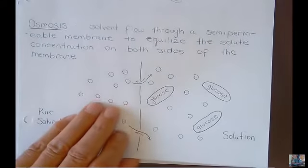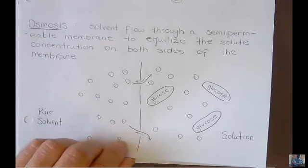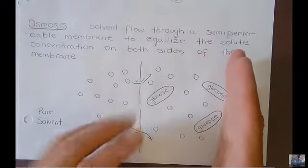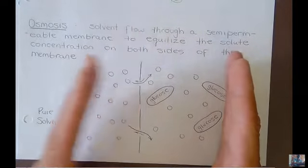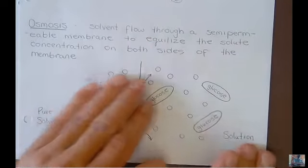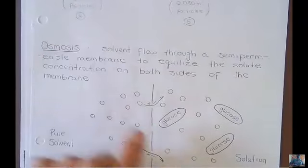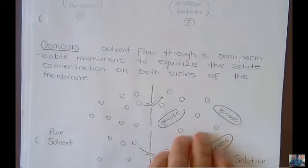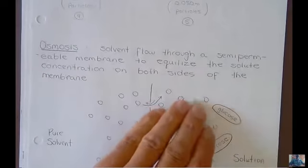If I put more pressure than that, I can actually create reverse osmosis and force the water in the direction that it doesn't want to go against nature, taking water out of this concentrated side and pushing it in the other direction. That's one way to create pure water from salty water. Some desalinization plants use reverse osmosis where you put pressure on the salty water to force fresh water out the other side.